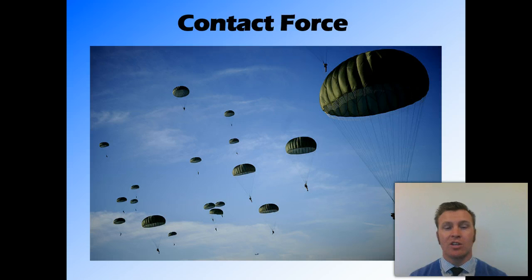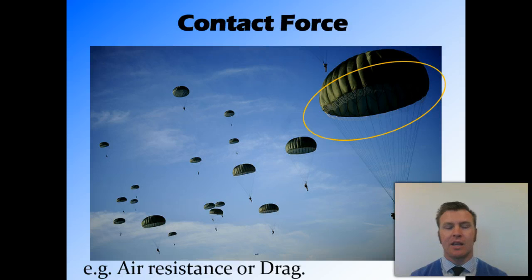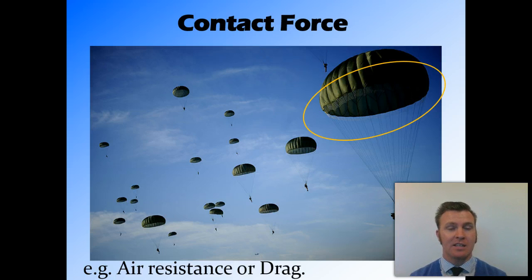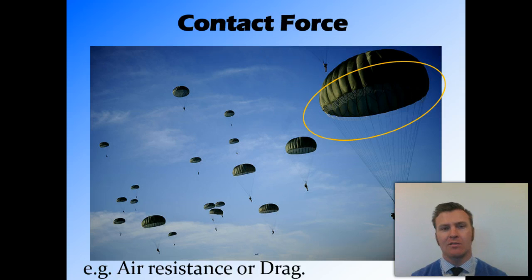This is a bit of a tricky one because you can't see where the contact is here, but in air resistance or drag that's causing this paratrooper to slow down, the air is actually in contact with the material of his parachute. It's a little bit tricky because you can't see the air, but the air is physically in contact, which makes air resistance or drag a contact force.